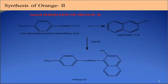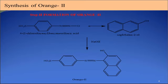Step 2: formation of Orange 2. The diazonium salt of sulfanilic acid couples with beta-naphthol with the help of sodium hydroxide to give Orange 2. Regarding Orange 1: if we use alpha-naphthol as the coupling agent instead of beta-naphthol, we synthesize Orange 1. So, beta-naphthol gives Orange 2 and alpha-naphthol gives Orange 1.